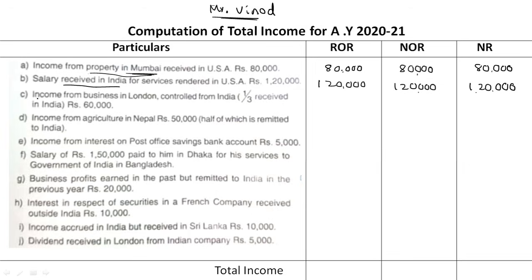Point C: Income from business in London controlled from India. This is foreign income, but since the business is controlled from India, it is taxable for ROR and NOR. However, 1/3rd received in India is taxable. So 1/3rd of Rs. 60,000 = Rs. 20,000 is taxable in the non-resident case.